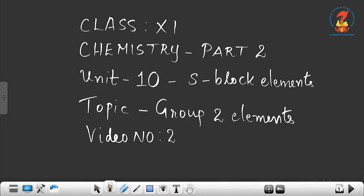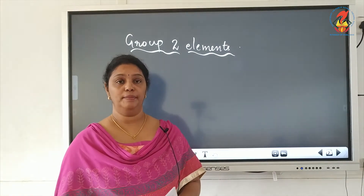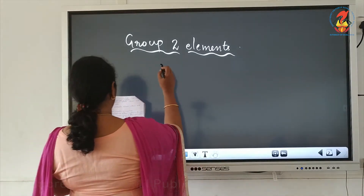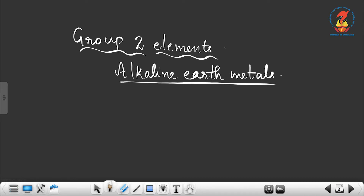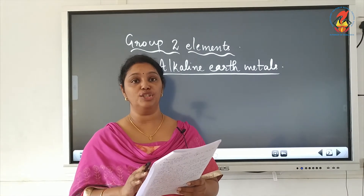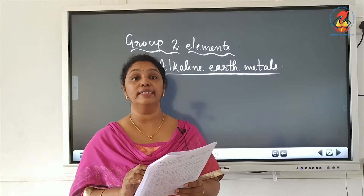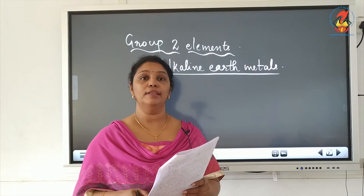In this video we are going to discuss group 2 elements. Group 2 elements also belong to the s-block and can be called alkaline earth metals. They are called alkaline earth metals because their oxides and hydroxides are alkaline in nature, and these metal oxides are found in the earth's crust.